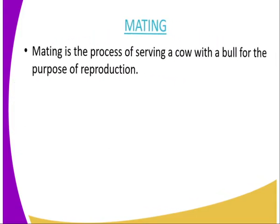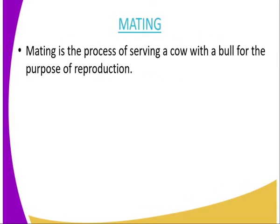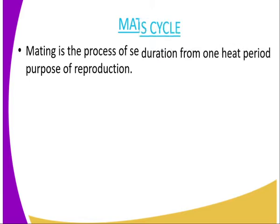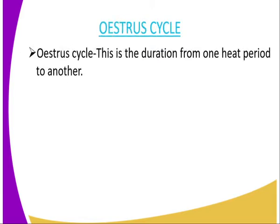Then we go to mating. Mating by definition is the process of serving a cow with a bull for the purpose of reproduction. That is what we refer to as mating.